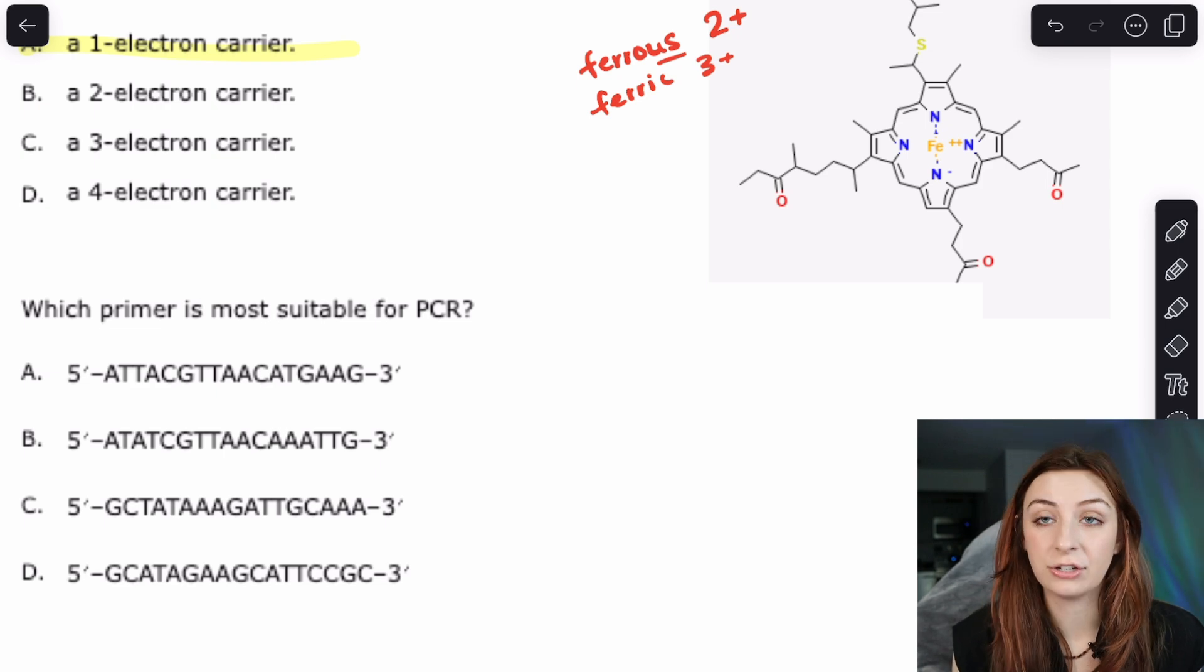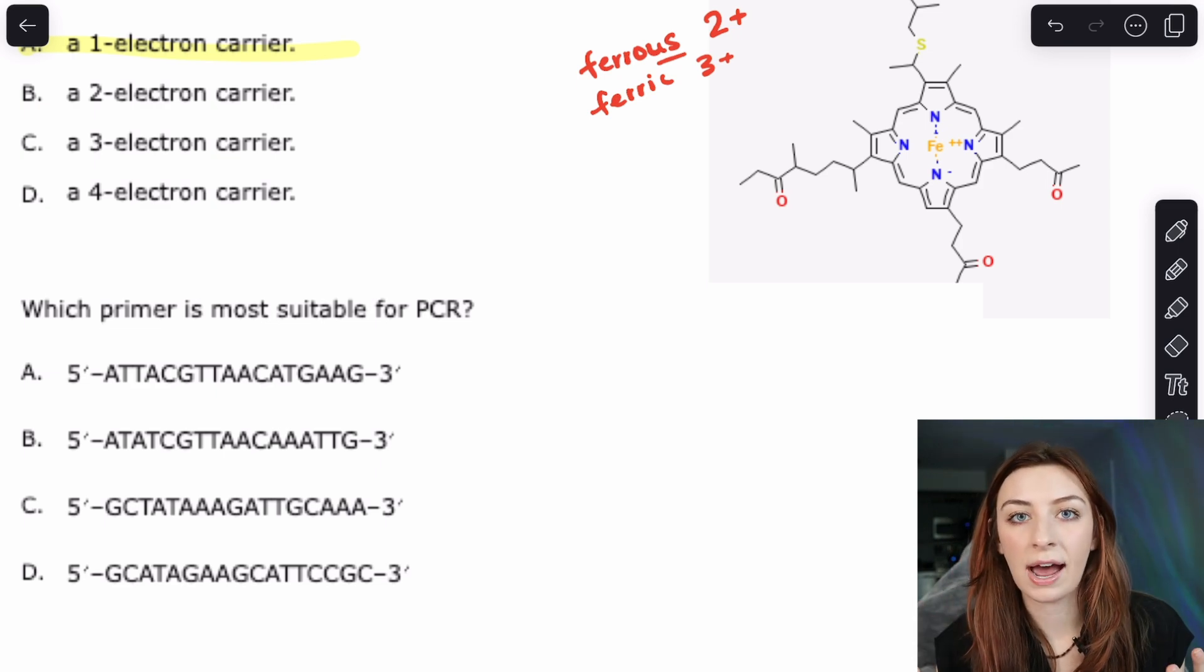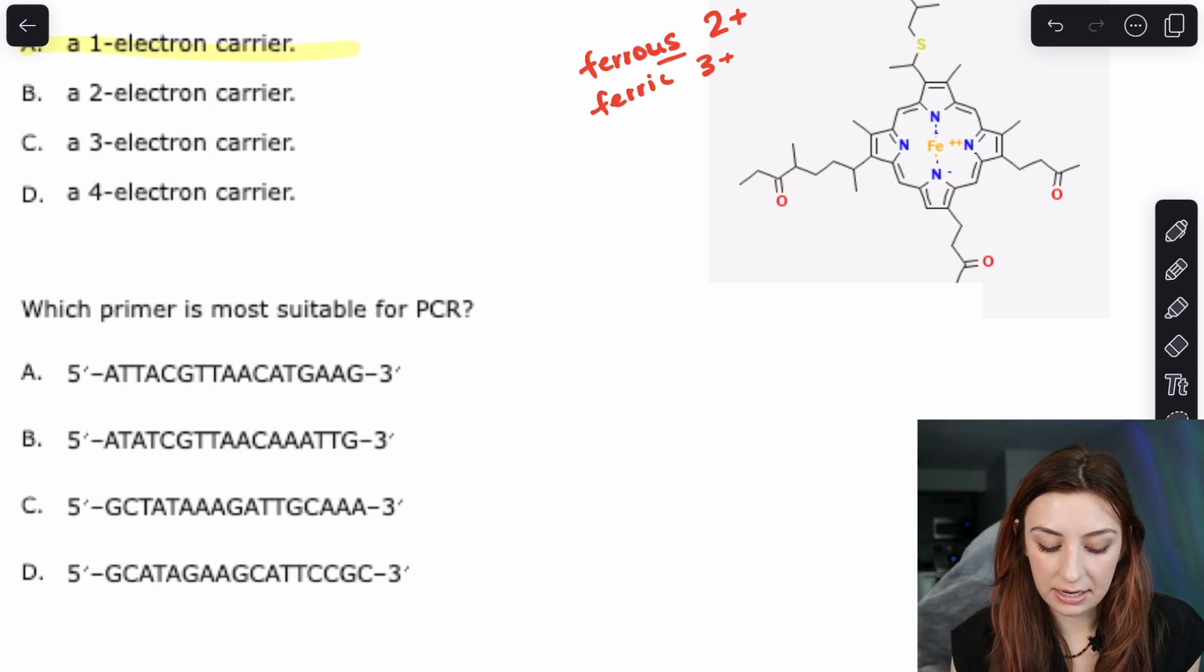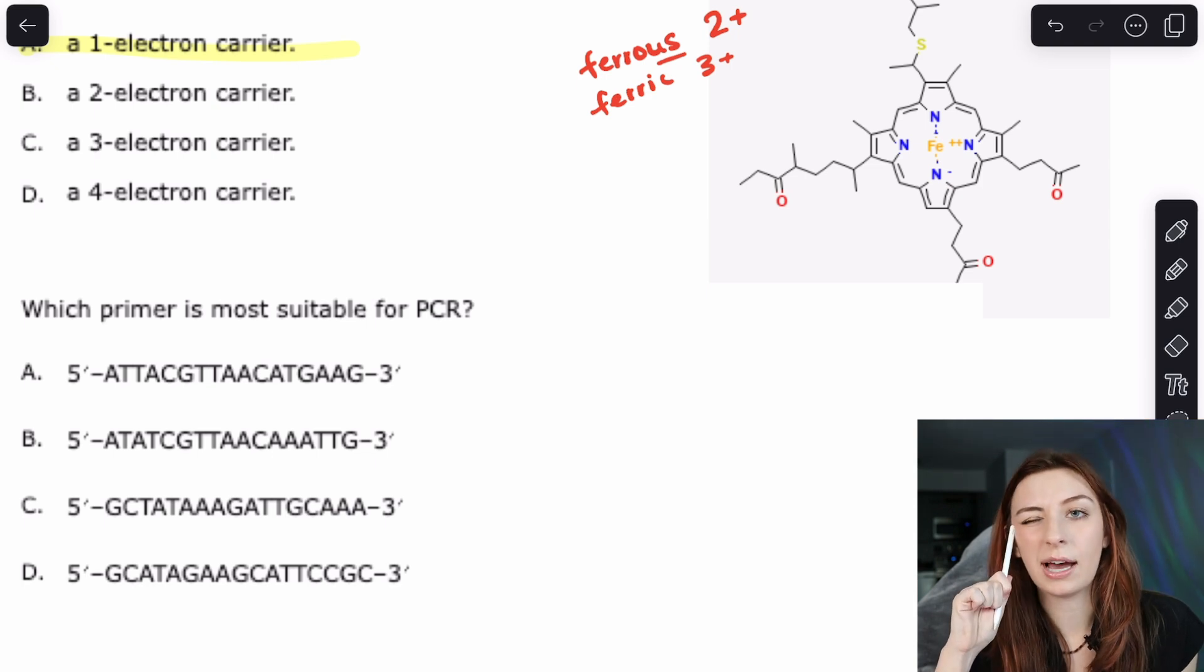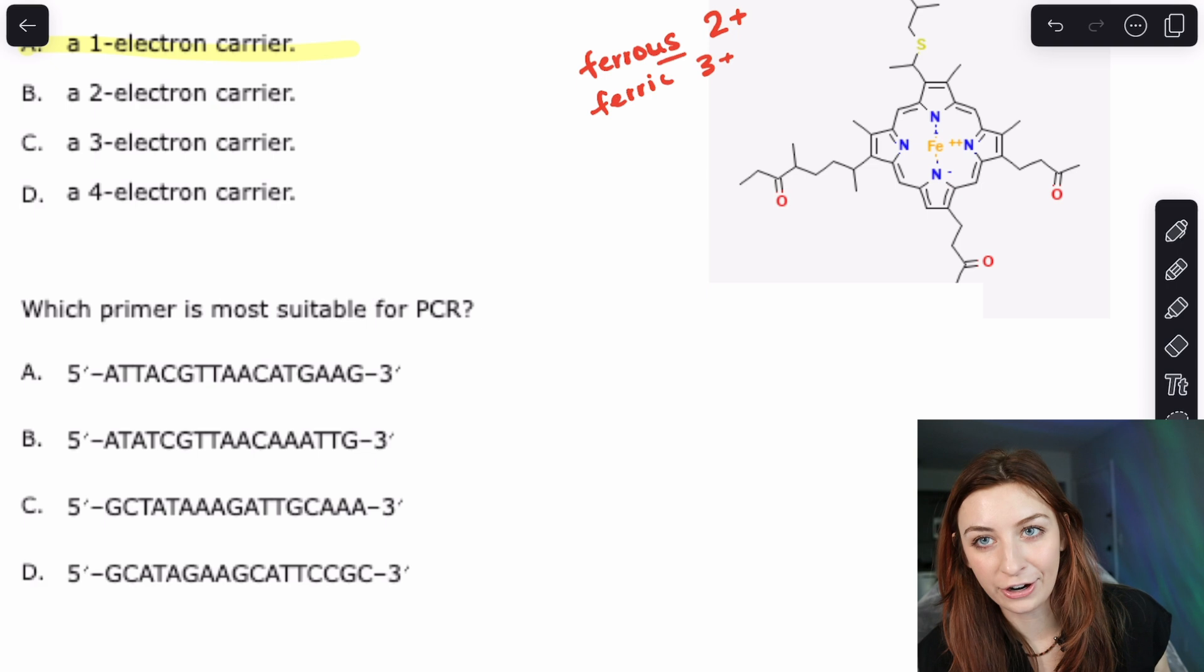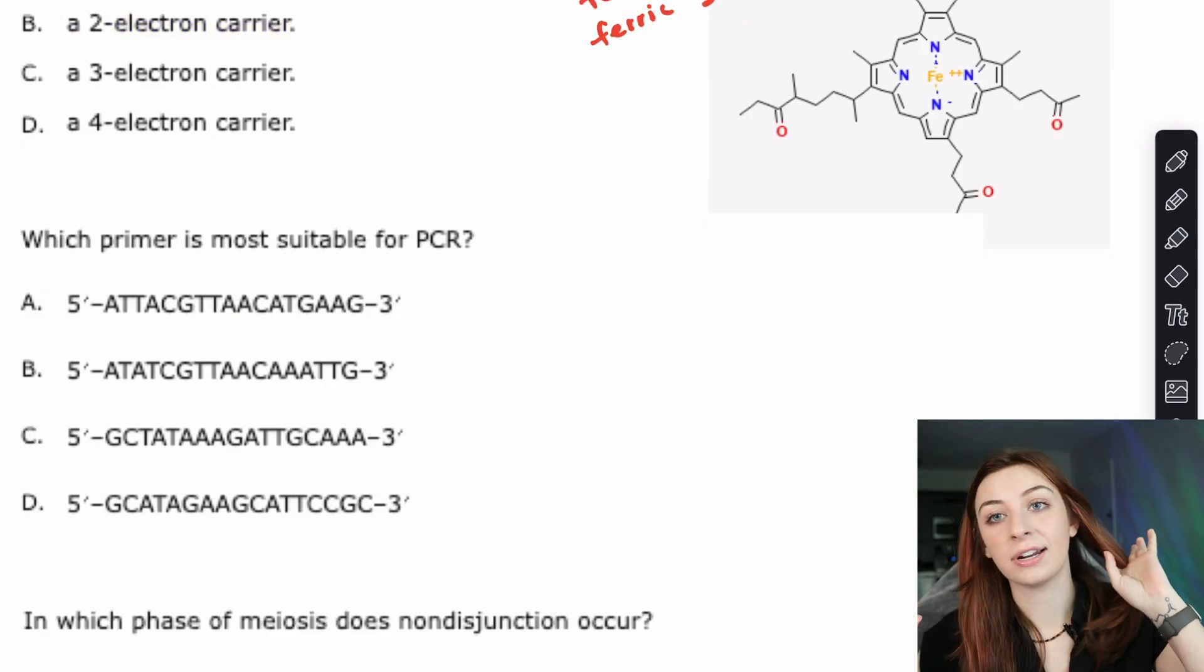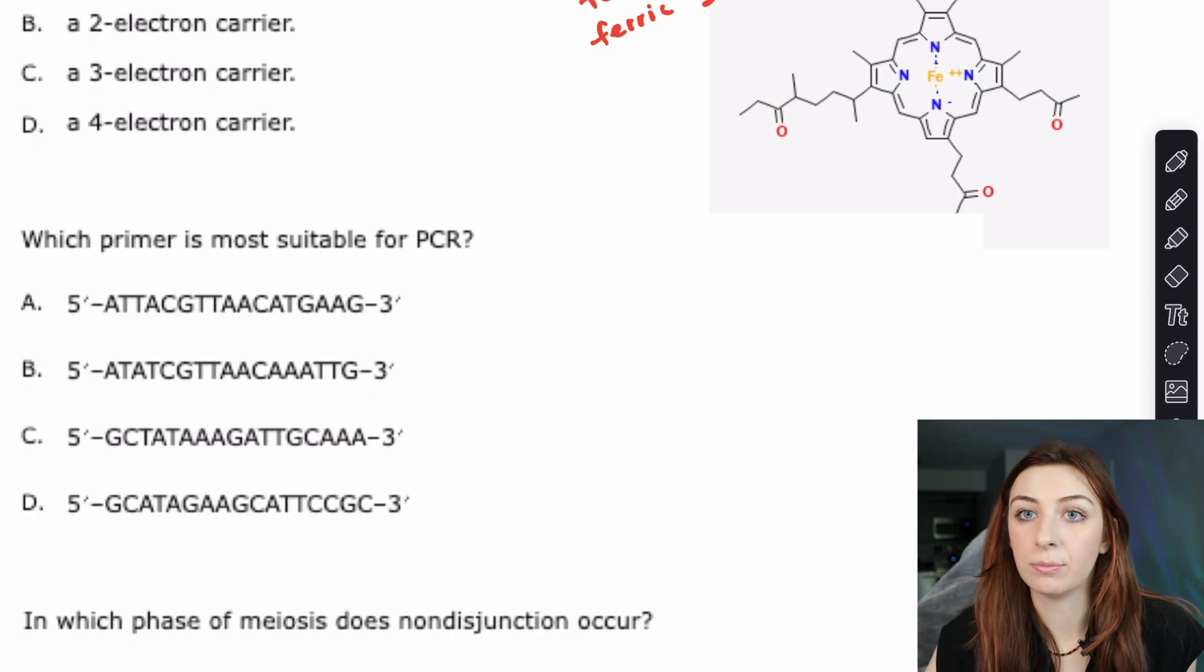You'll learn later on in medical school that when heme actually goes through this transition from a ferrous two plus state to a ferric three plus state that's actually bad and that's a pathological state called methemoglobinemia. But now you can see cytochrome C and be like oh yeah that one's that one that has the heme moiety. It's just like hemoglobin and I remember that there's a ferrous and a ferric state and so there's only one charge difference and so it must be only a one electron carrier. But that was just a memorization question. I hate those. I'm sorry they do pop up.